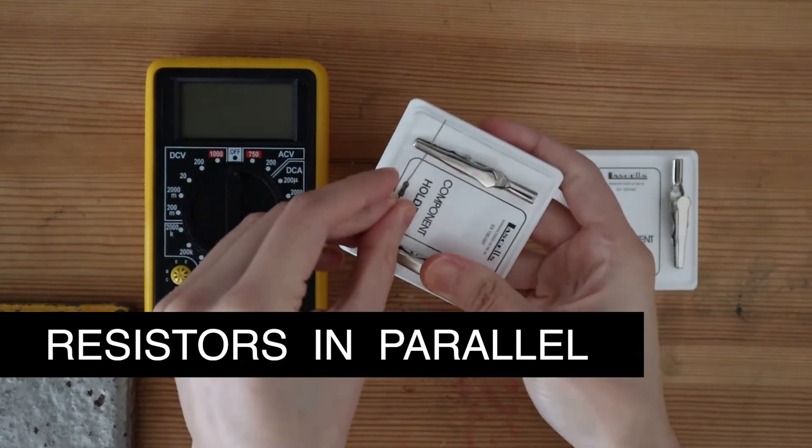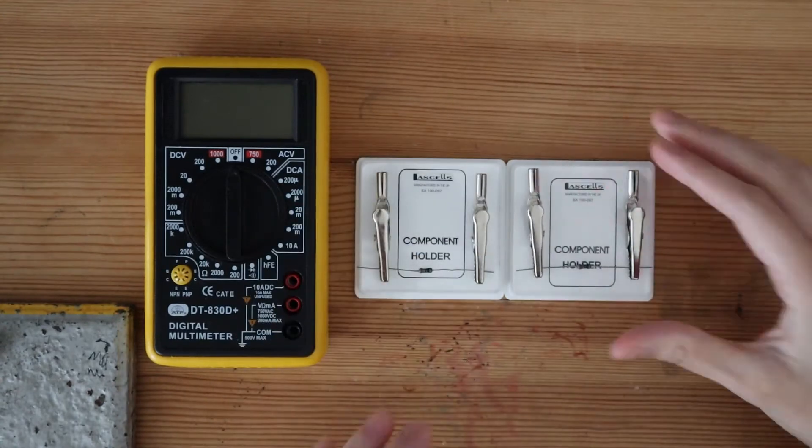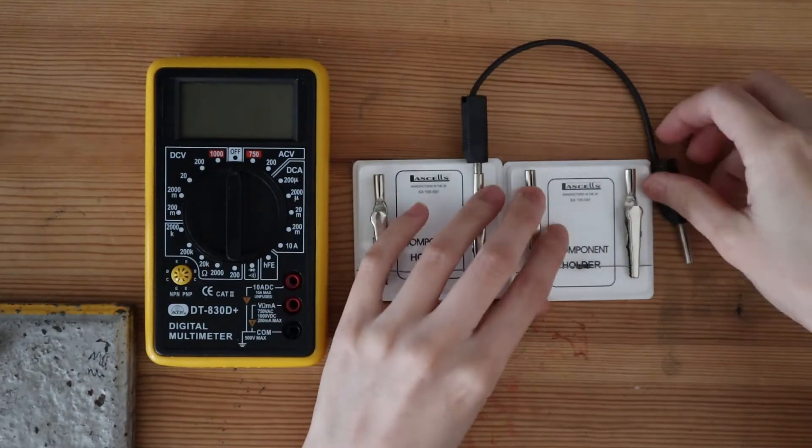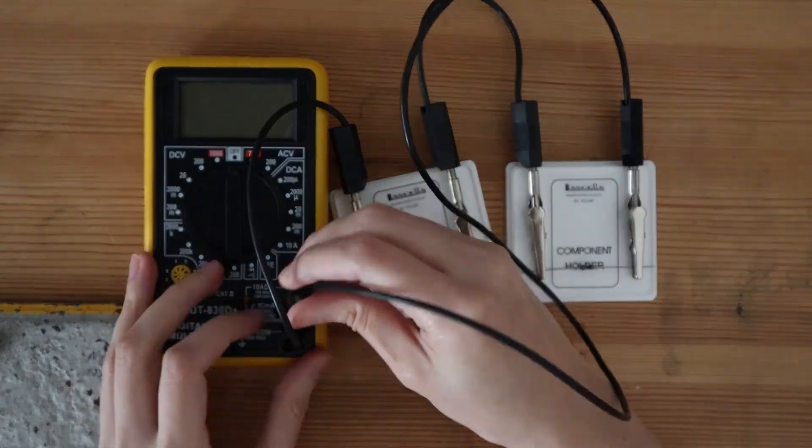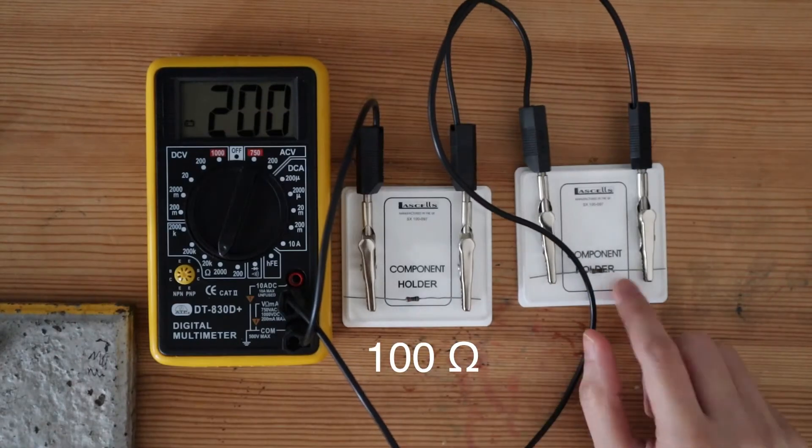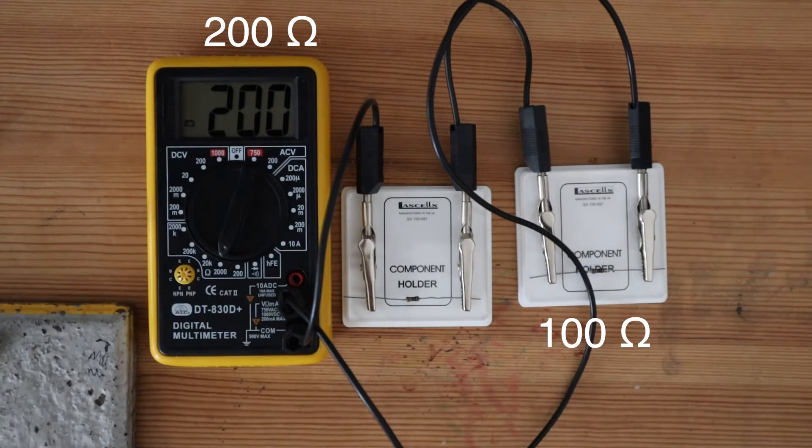In one of my previous videos, we have seen that two resistors connected in series produces a total resistance that is the sum of their individual resistance. If these two resistors individually have 100 ohms, their total resistance is 200 ohms. Now that's pretty straightforward.